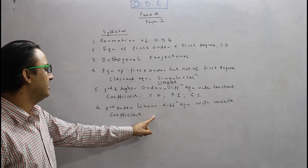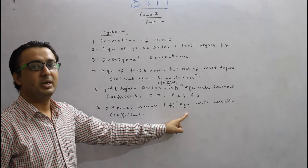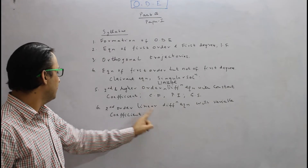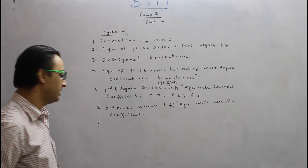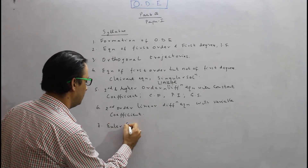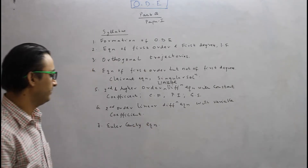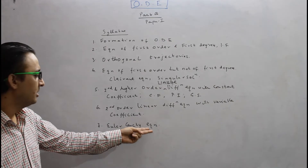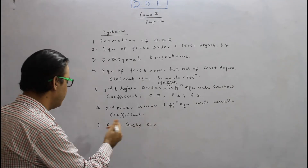For variable coefficients, we are dealing with three methods: the UV method, normal form, and changing the independent variable. The seventh topic is the Euler-Cauchy equation. Questions are asked on this mostly and it is a very well-known format, so we can identify the equation and solve it very easily.